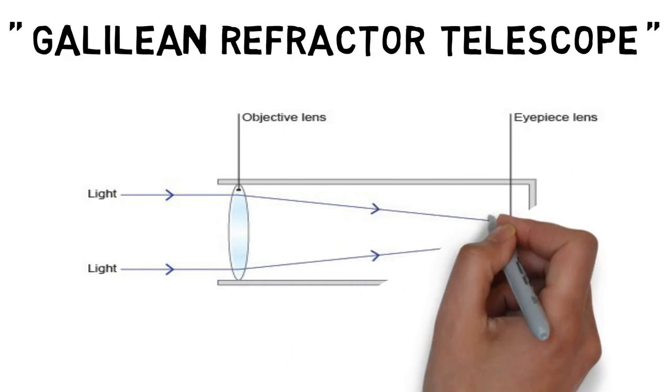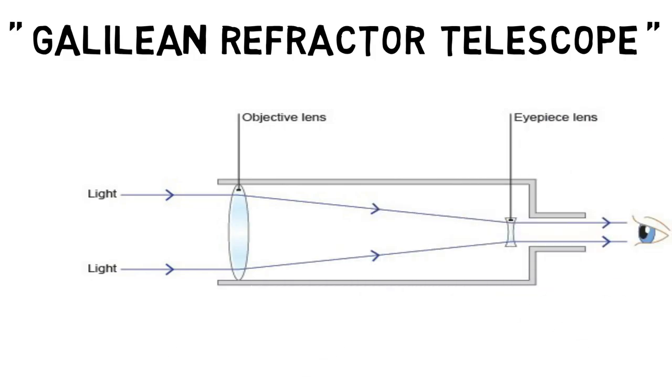Galilean refractor telescope. In the image, as you can see, the light first goes into the convex lens, which is called the objective, placed first here, and then it goes into the concave lens, also called the eyepiece, placed after the convex lens or objective, to magnify the image.